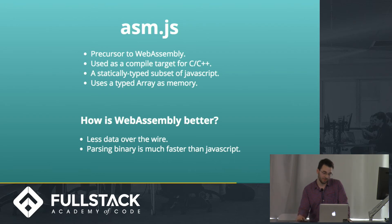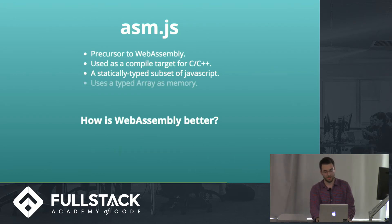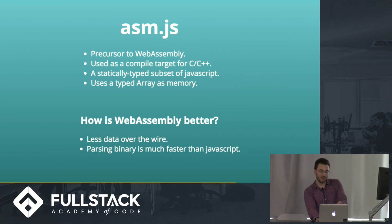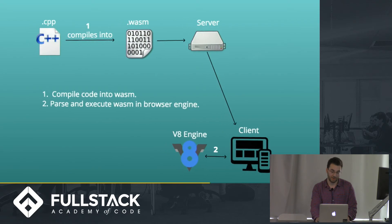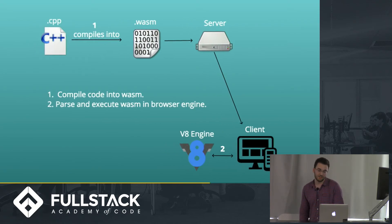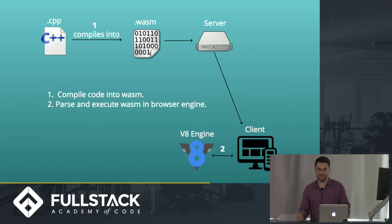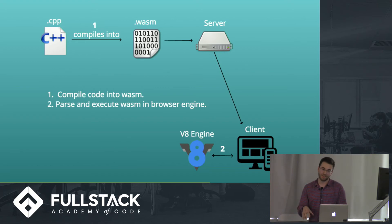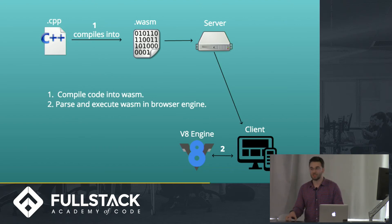So how is WebAssembly better than ASM.js? There's less data over the wire, and parsing binary is much faster for your JavaScript engine than parsing JavaScript. From the server to the client, you're sending a giant ASM.js file — a giant chunk of JavaScript that takes longer to send. Parsing ASM.js is the real bottleneck. When V8 or SpiderMonkey tries to parse JavaScript, that's going to be much slower than parsing WASM, which is binary code and very quick.